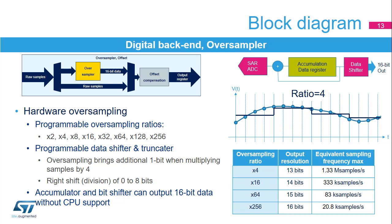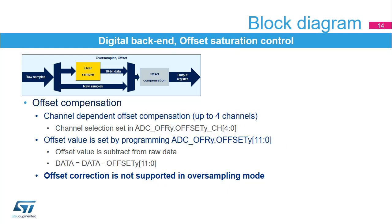An offset Y (Y equals 1, 2, 3, or 4) can be applied to a channel by setting the bit offset Y EN equals 1 into ADC OFRY register. The channel to which the offset will be applied is programmed into the bits offset Y CH4 to 0 of ADC OFRY register. In this case, the converted value is decreased by the user-defined offset written in the bits offset Y 11 to 0. The result may be a negative value, so the read data is signed.